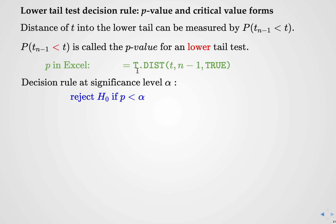This can be calculated directly in Excel using the t-distribution command. You put in the calculated t-statistic, your degrees of freedom, and TRUE, and that will return the p-value. The decision rule is then the same as with an upper-tail test: we will reject the null hypothesis if the p-value is less than alpha — for example, less than 0.05.